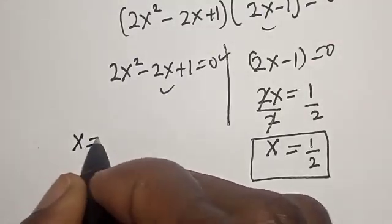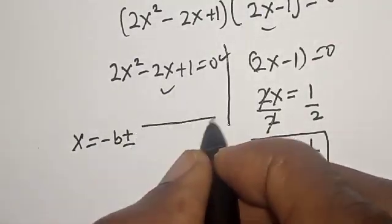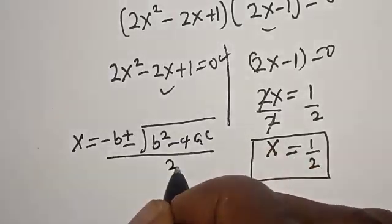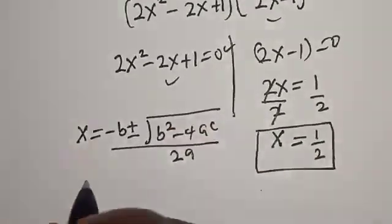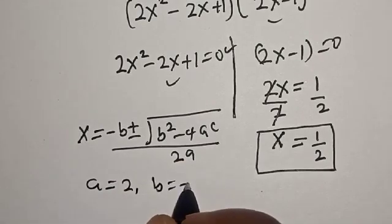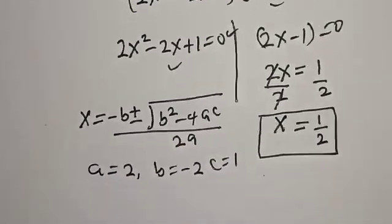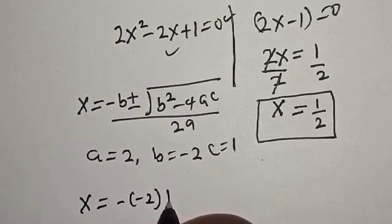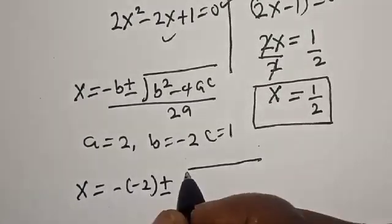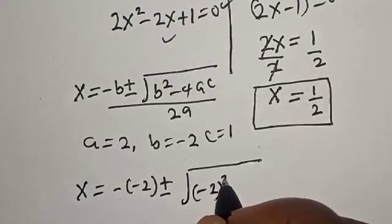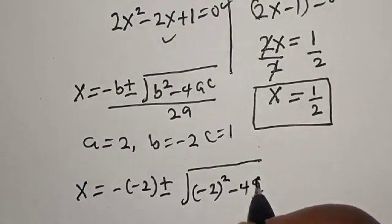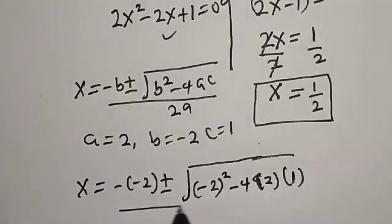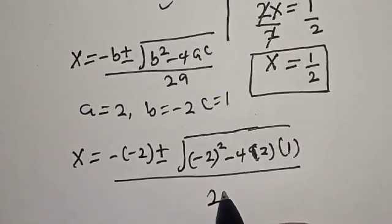The quadratic general formula is s equals minus b plus or minus square root of b-squared minus 4ac, all over 2a. From our equation, a is equal to 2, b is equal to minus 2, c is equal to 1. Now let's substitute these values.